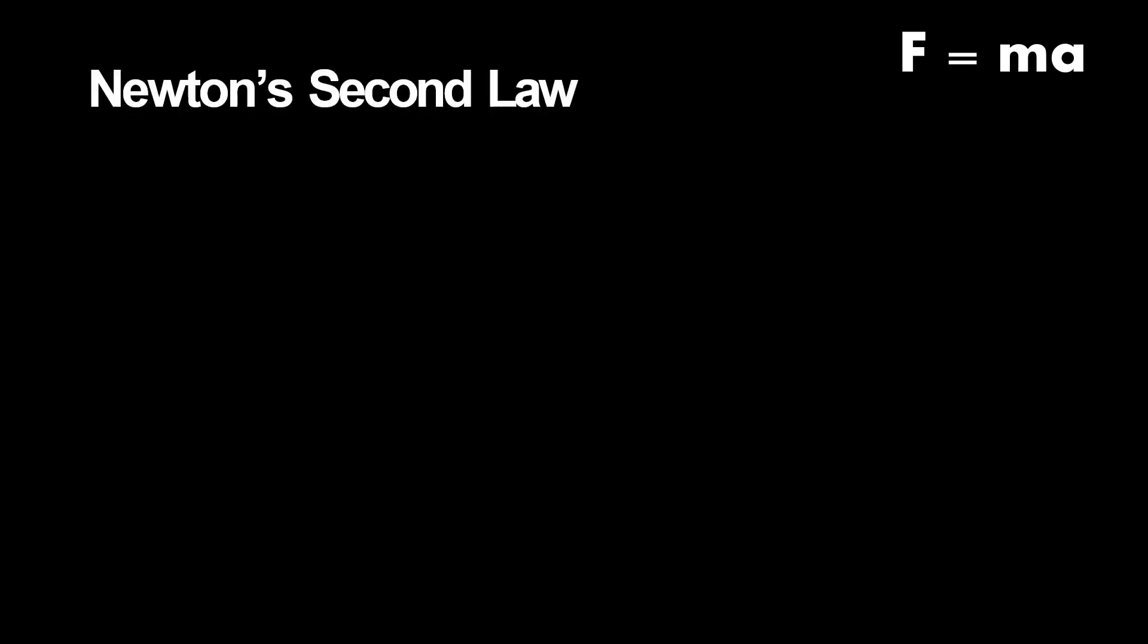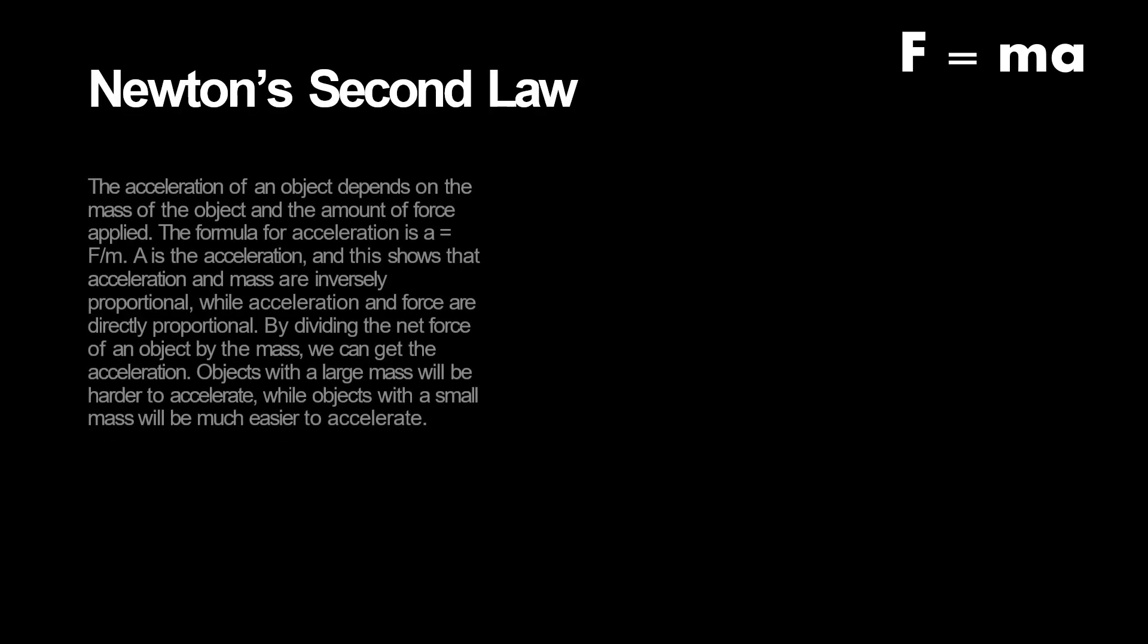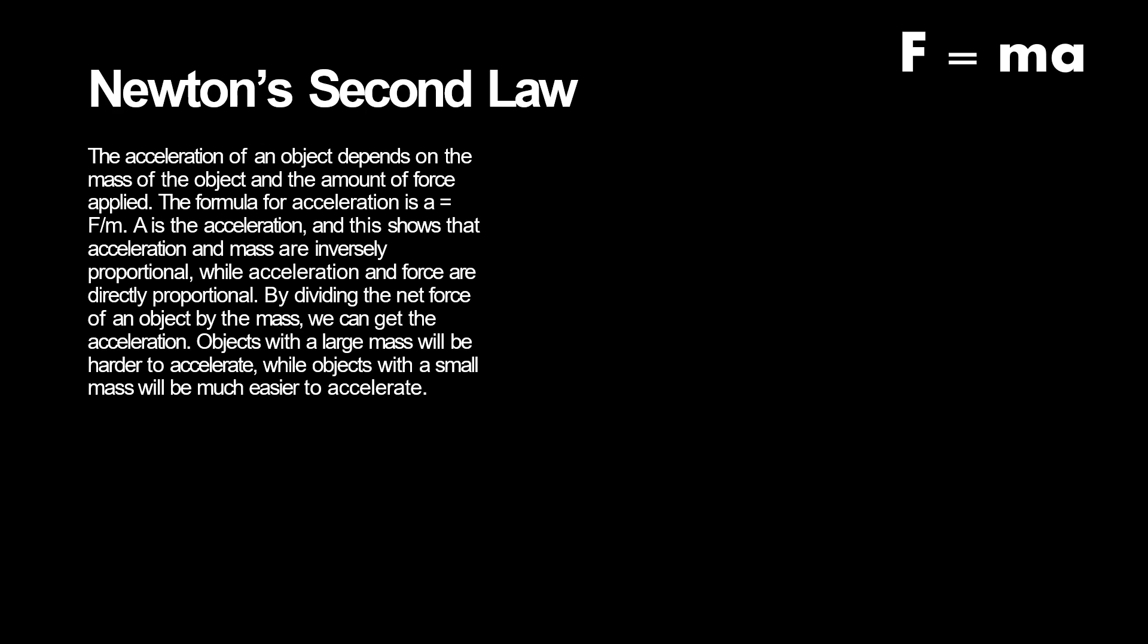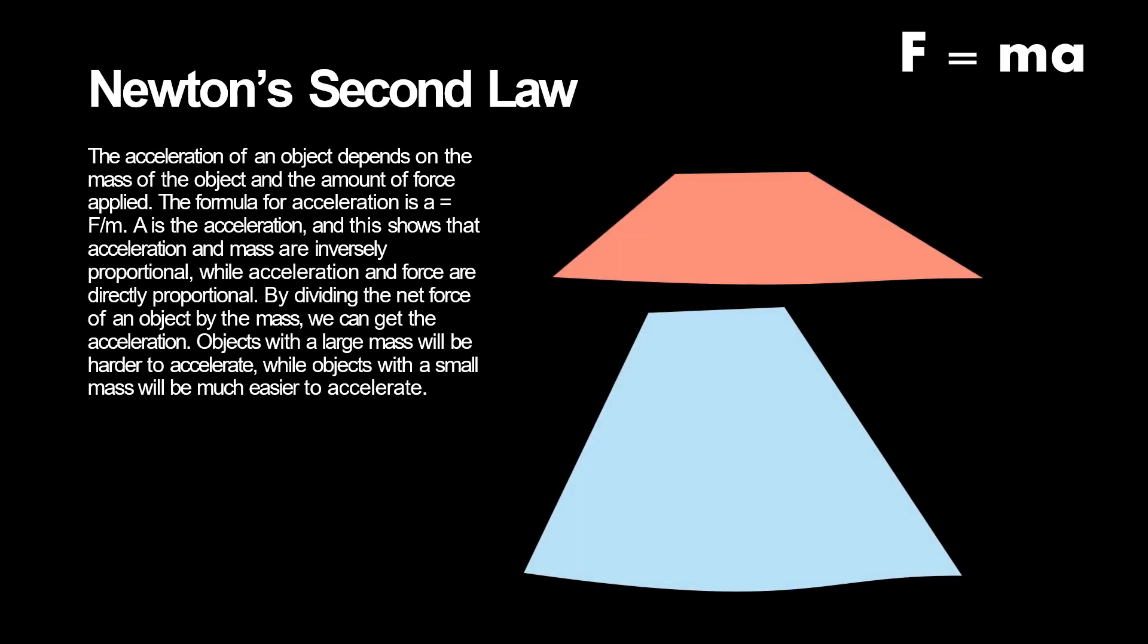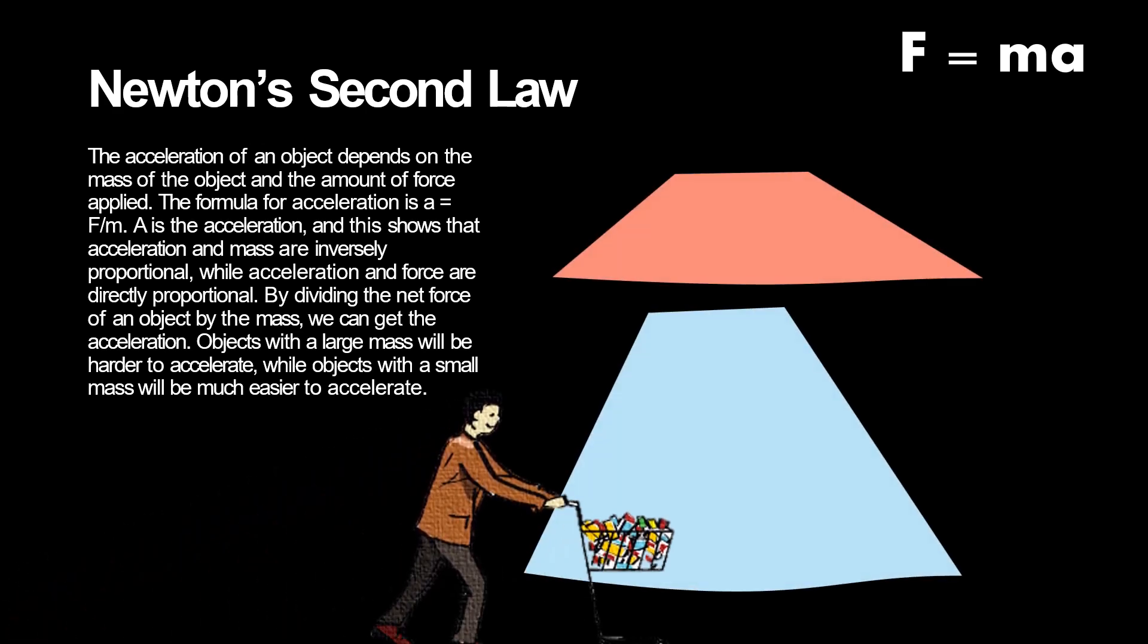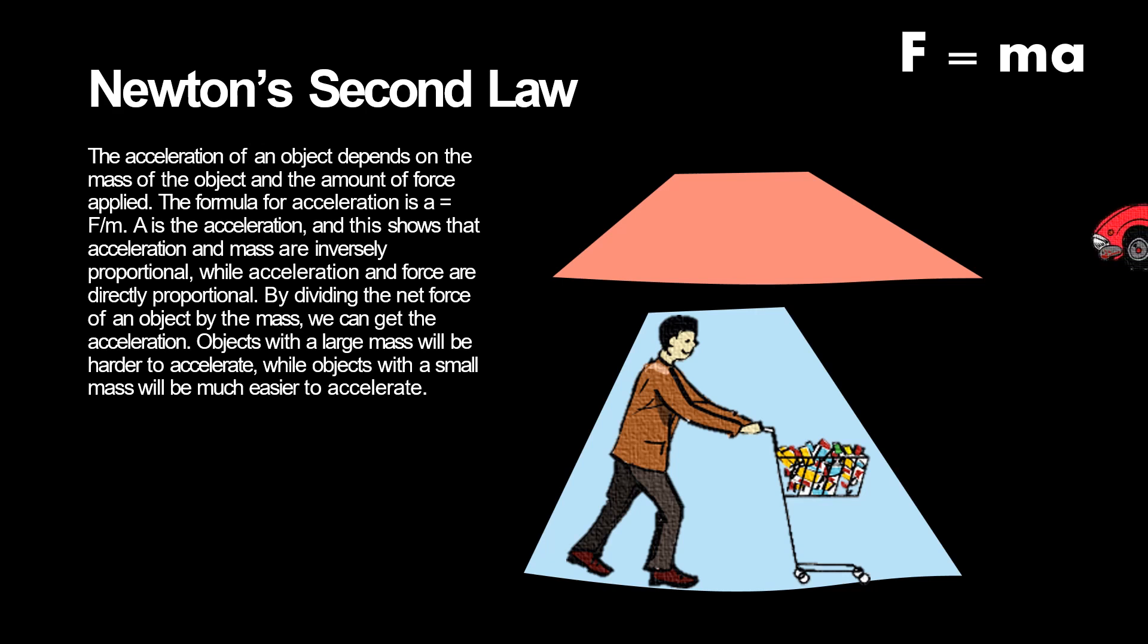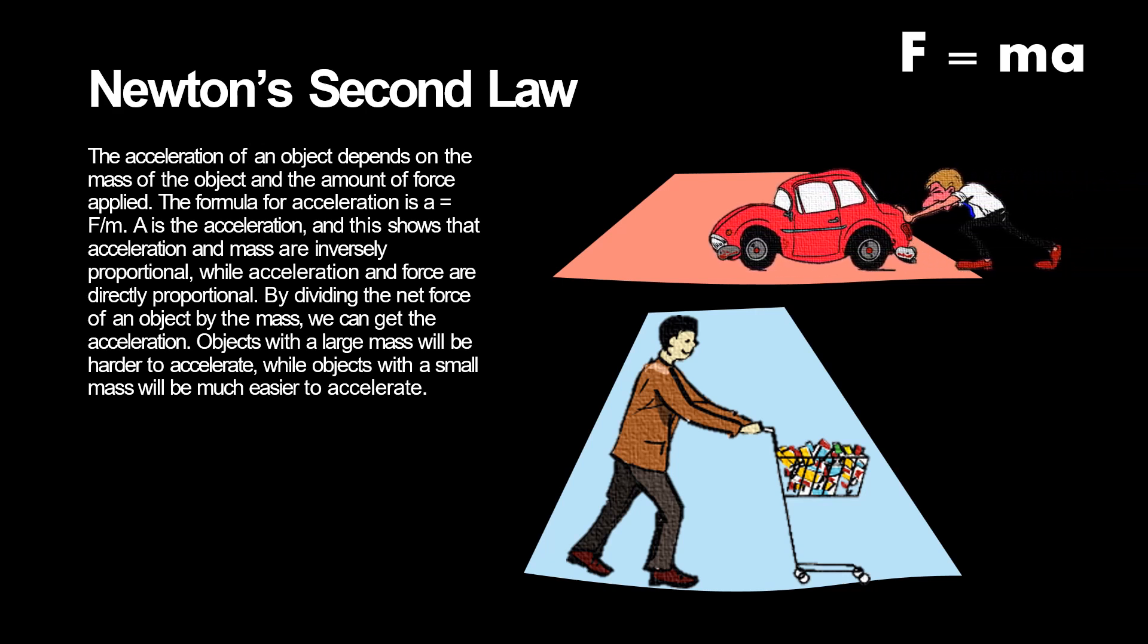Newton's second law explains that acceleration and mass are inversely proportional, because force is equal to mass times the acceleration. In other words, acceleration is equivalent to the force divided by mass. This is why objects with less mass, such as a shopping cart, will be much easier to accelerate than objects with more mass, such as a car. More mass means more force needed to accelerate.